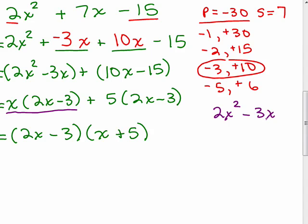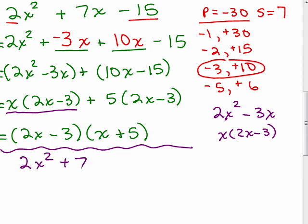So I take the 2x squared minus 3x, remember to put the x in, take out the greatest common factor, and there's my shortcut, so that if I was given 2x squared plus 7x minus 15, I automatically know that's going to be one of my factors. So that's the tricky method.